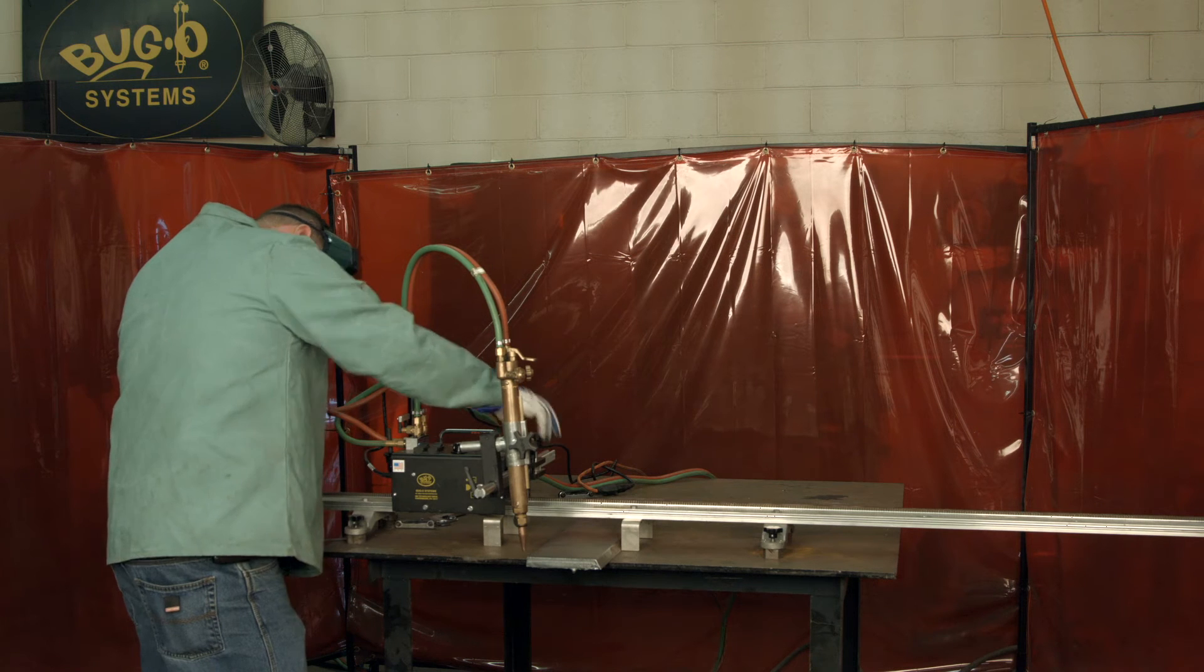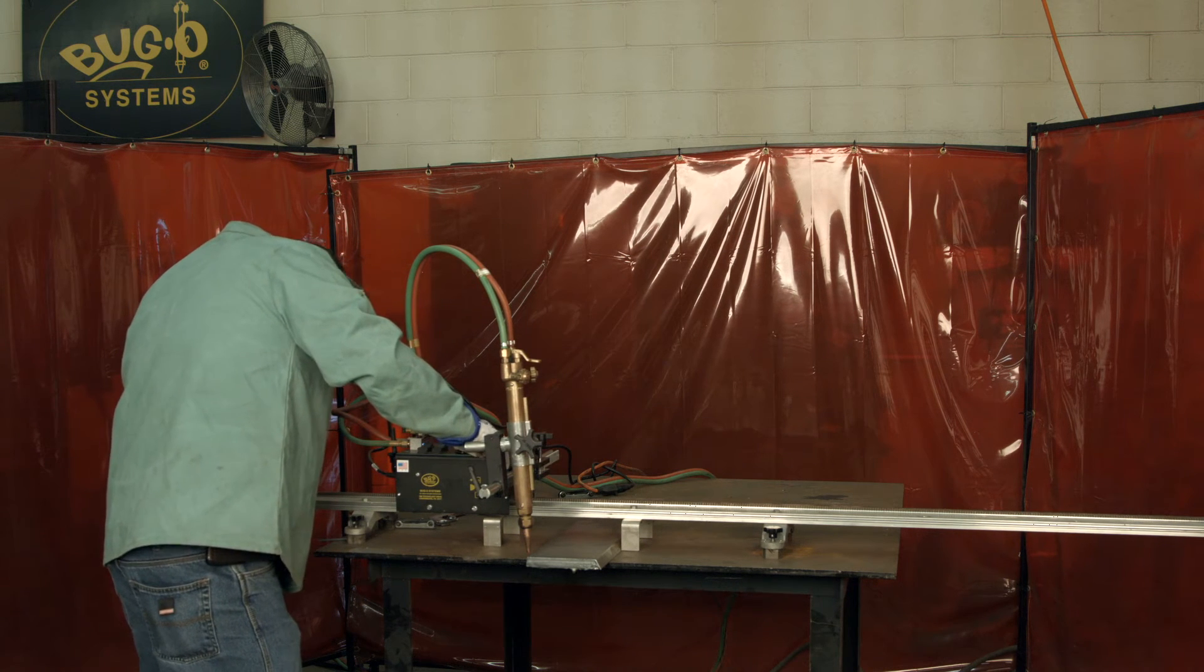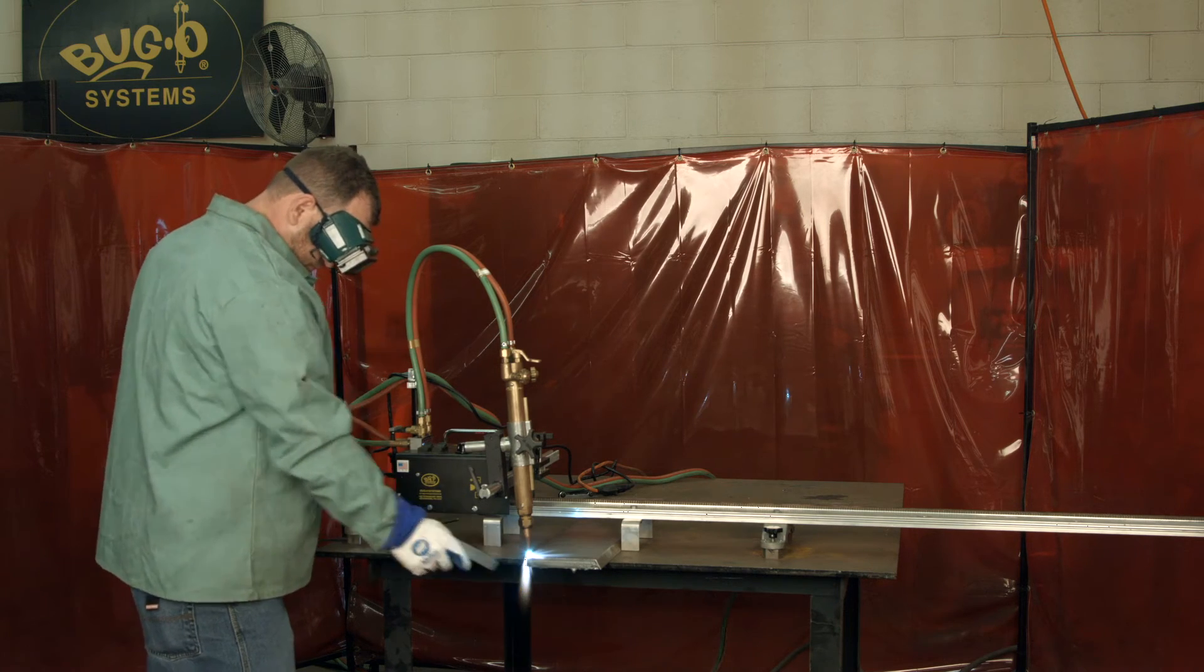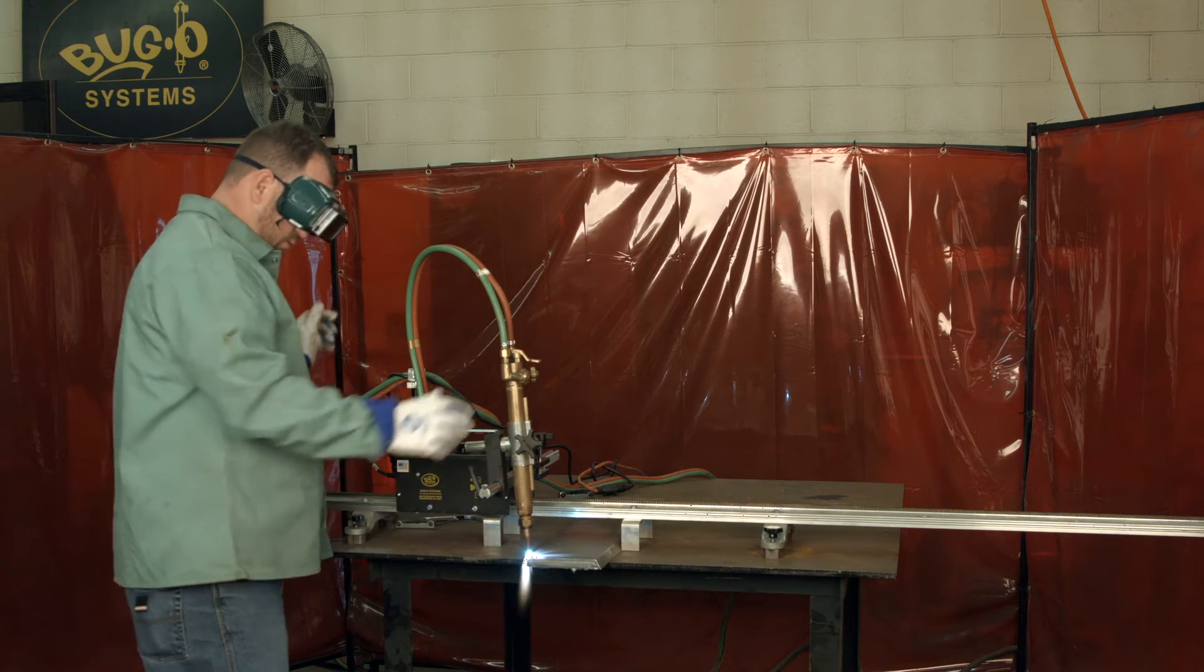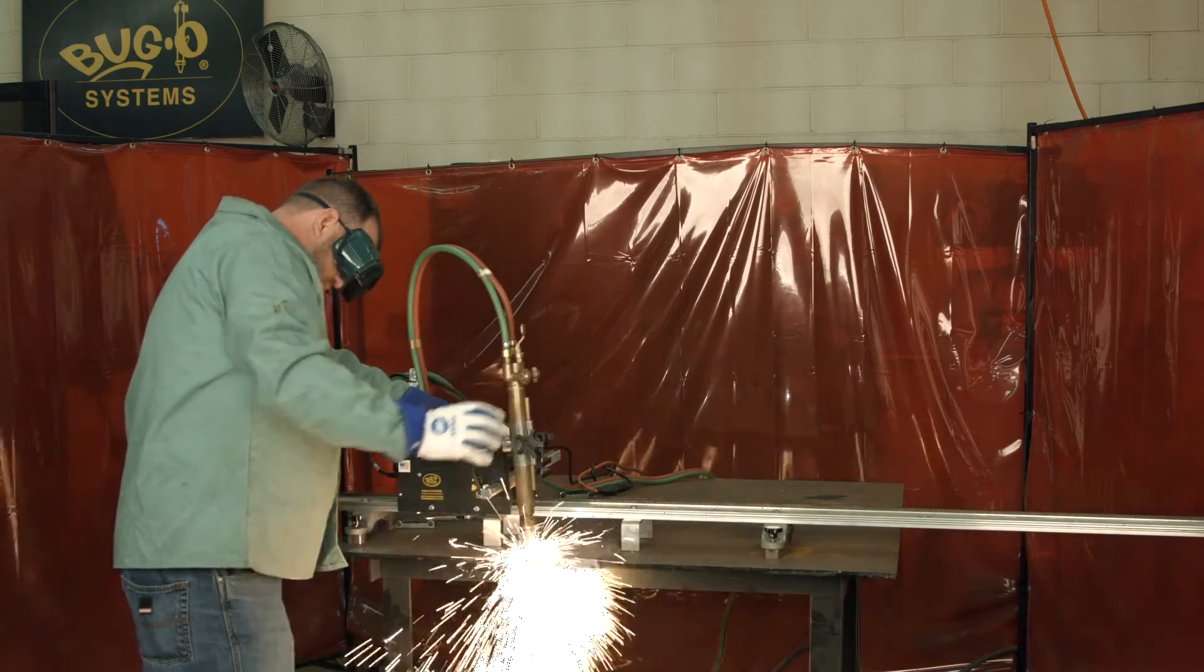Once you've pre-set your needle valves on your torch to where you want them for your cut, you would make sure that it's aligned, you would very simply turn on your gas manifold to start your preheating gas, ignite your torch, and once you've got the metal properly preheated, you would fire your cutting oxygen and make your cut.